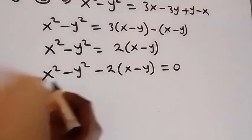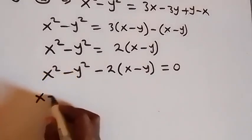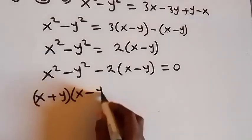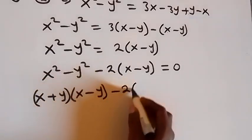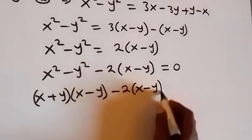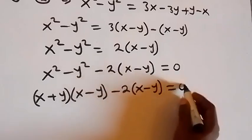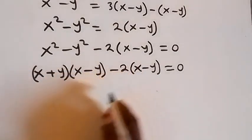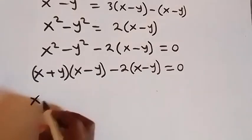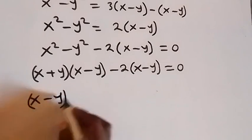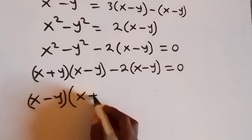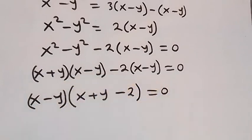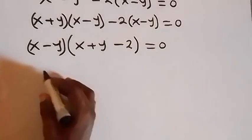Using the difference of two squares, x squared minus y squared can be written as x plus y into bracket x minus y. So we have x plus y into bracket x minus y, minus 2 into bracket x minus y, equals 0. Factoring out x minus y, we get x minus y times the quantity x plus y minus 2, equals 0.